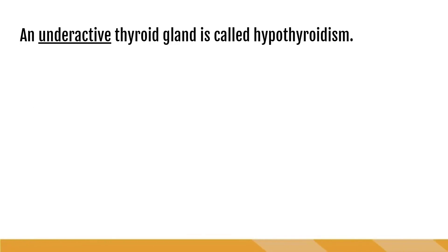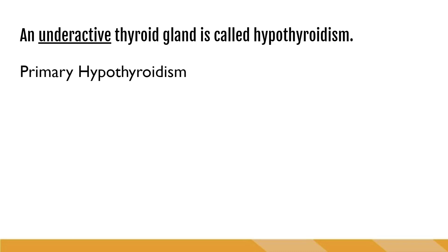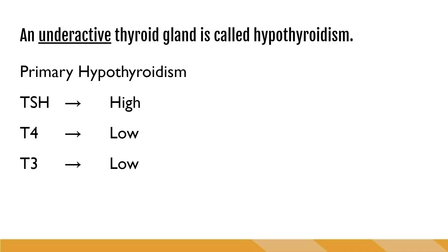When the thyroid gland is not producing enough hormones, it is considered an underactive thyroid, which is called hypothyroidism. Hypothyroidism comes in two categories. Primary hypothyroidism results from the thyroid gland itself not functioning. In this scenario, TSH is high because the pituitary gland is trying to get the thyroid to make hormone, so it just keeps pumping out TSH, thinking eventually it will get the thyroid to make T3 and T4. But because the thyroid is not functioning appropriately, T3 and T4 remain low.